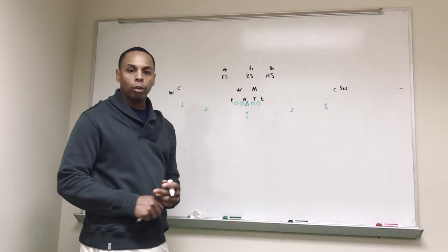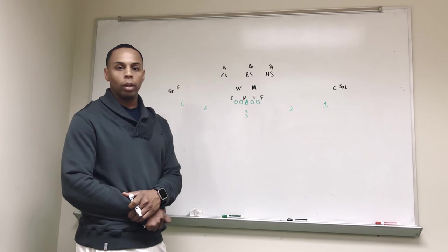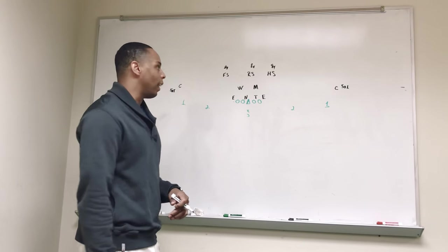Deuce is 2 and Solo is 1. So if you add that together, 2 plus 1 equals 3. So that's how we identify our cover 3 with our student athletes.